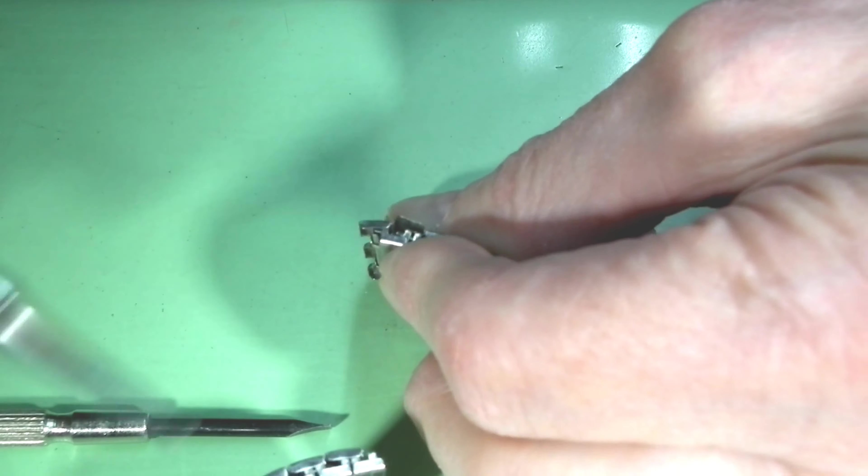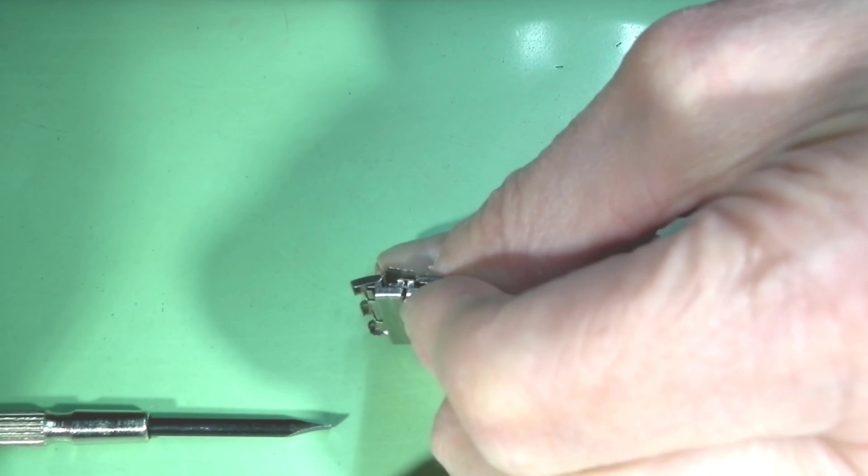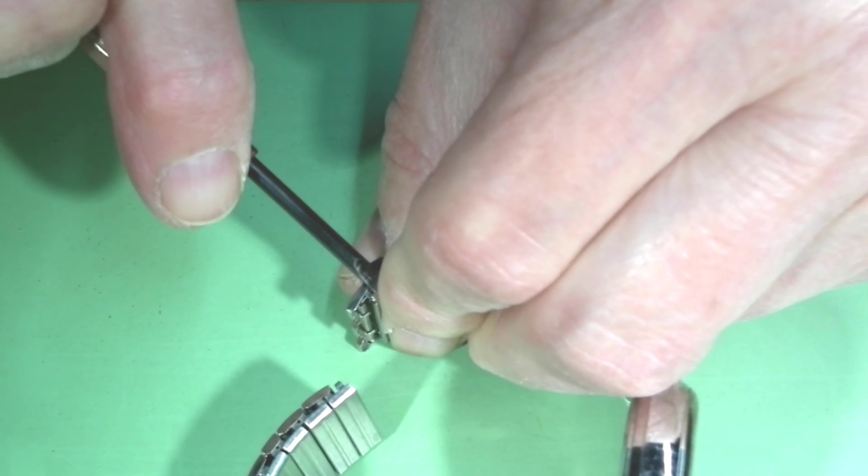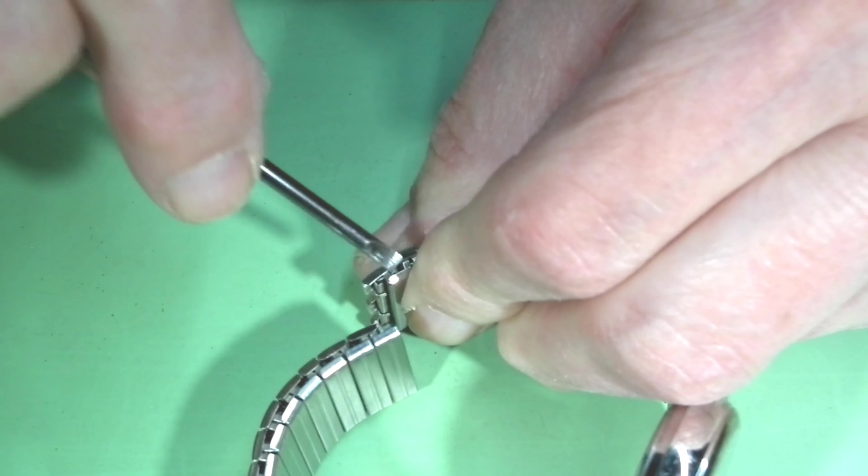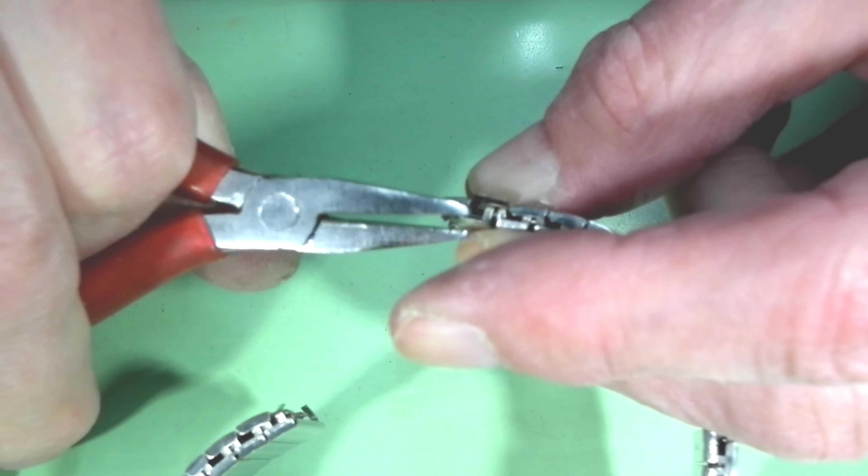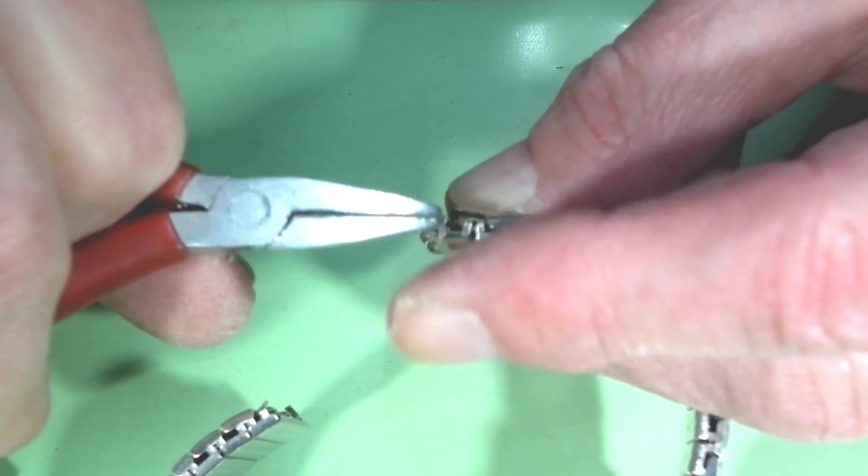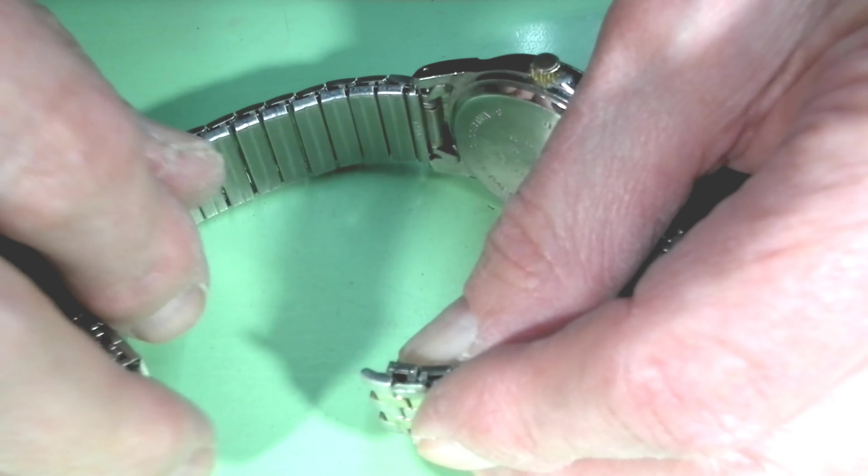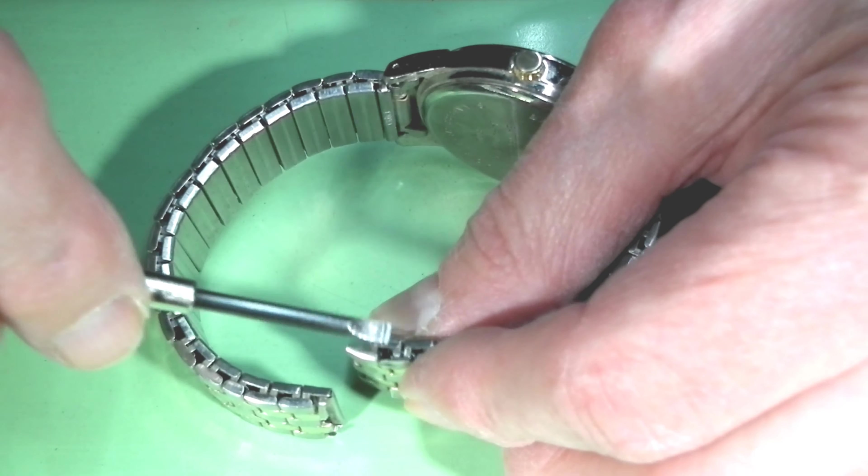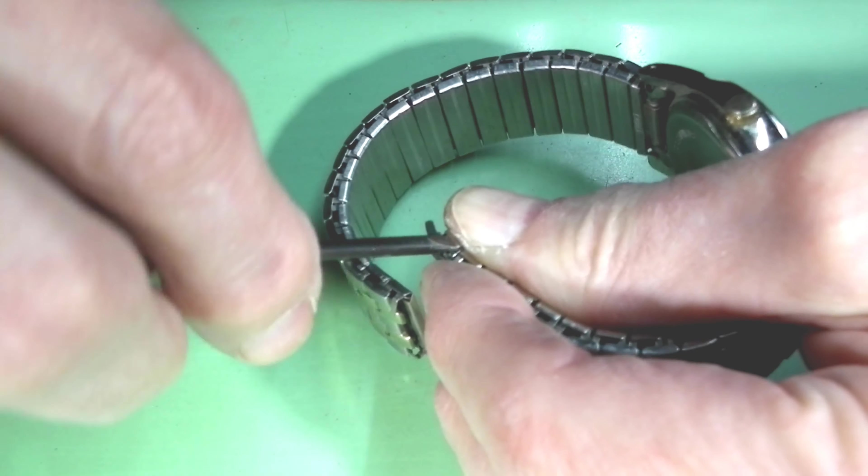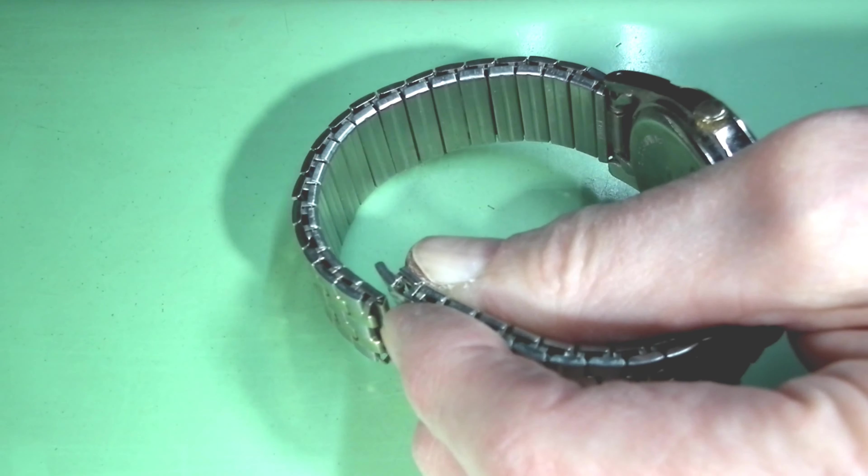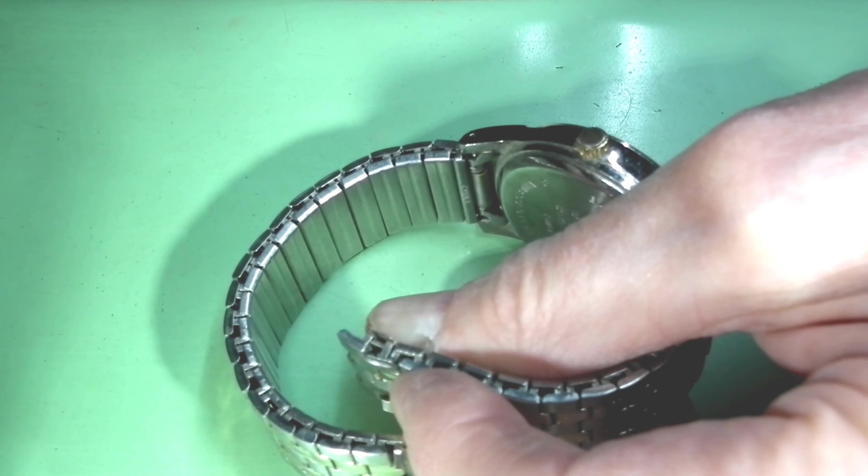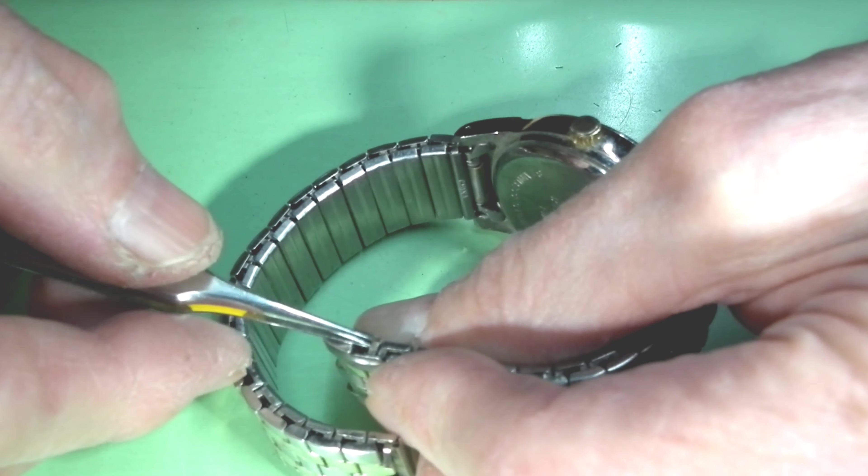I cannot remove the hook because another tab should be bent out. The same should be done on the other side. Now I can remove the hooks.